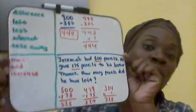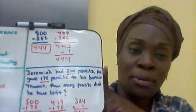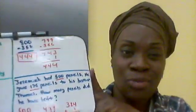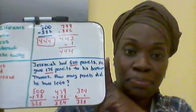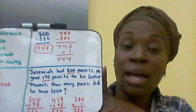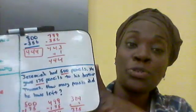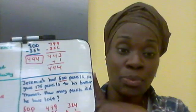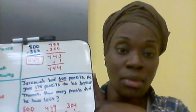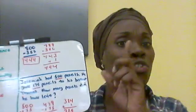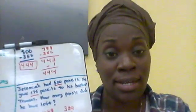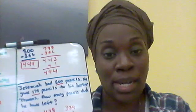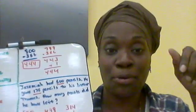So 500 minus 175 is 325. How did you feel about that one? I'm certain you did well. So what I'm going to do is erase this one and set up for the next one. I just want you to make sure that you've written your name, date, and subject — this is math — on your paper. Give me one second and I'll be right back.